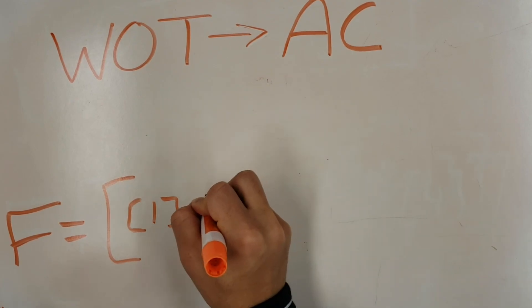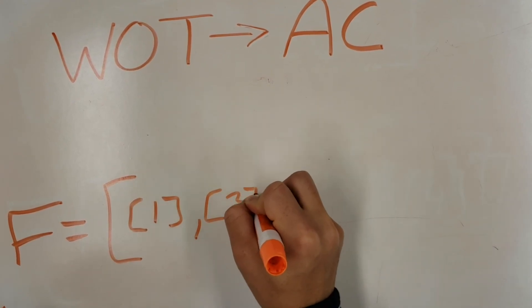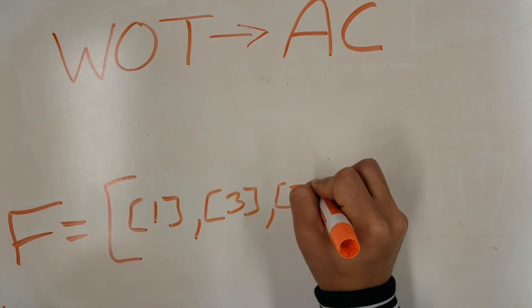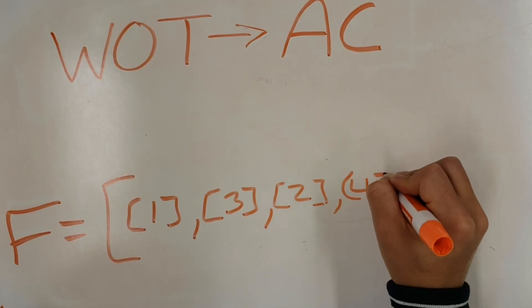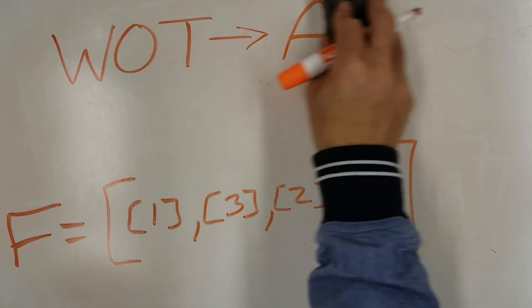Assuming the well-ordering theorem holds, the set UF of all the elements of the sets in F is ordered by some ordering or comparison mechanism which we'll call less than. Note each set in F is a subset of UF, and therefore all those sets follow the same ordering scheme.